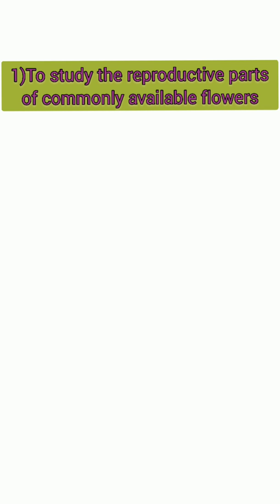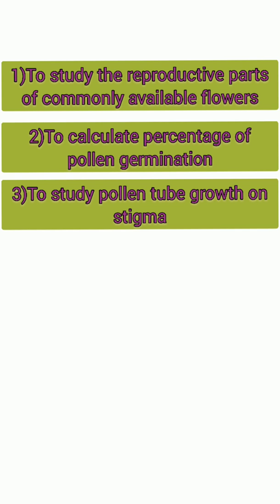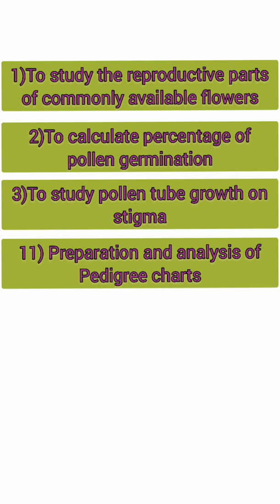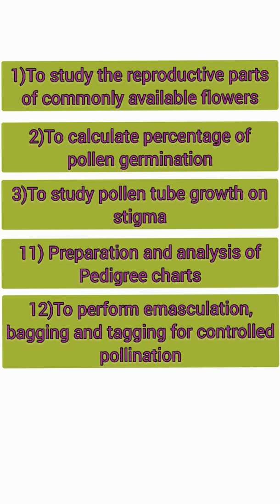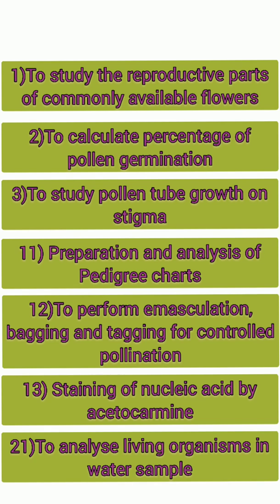Practical 1 is to study reproductive parts of commonly available flowers. Practical 2 is to calculate the percentage of pollen germination. Practical 3 is to study pollen tube growth on stigma. Practical 11 is preparation and analysis of pedigree charts. Practical 12 is to perform emasculation, bagging, and tagging for controlled pollination. Practical 13 is staining of nucleic acid by acetocarmine. Practical 21 is to analyze living organisms in a water sample.